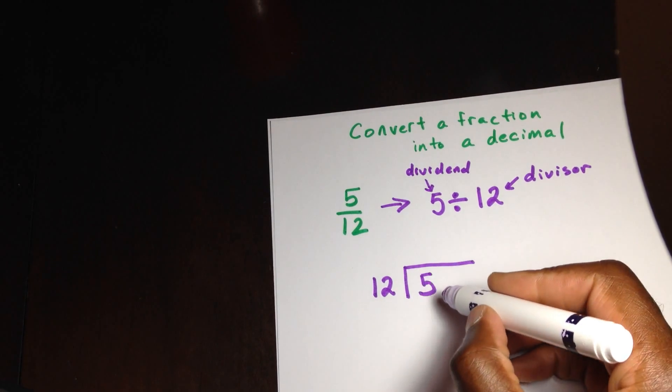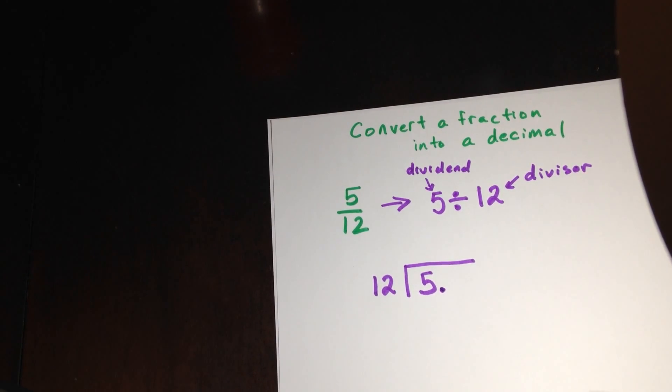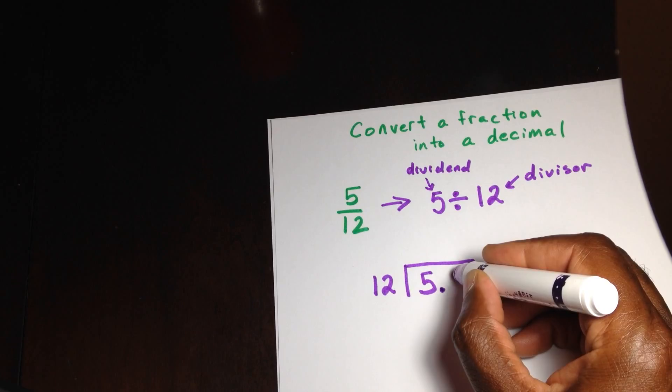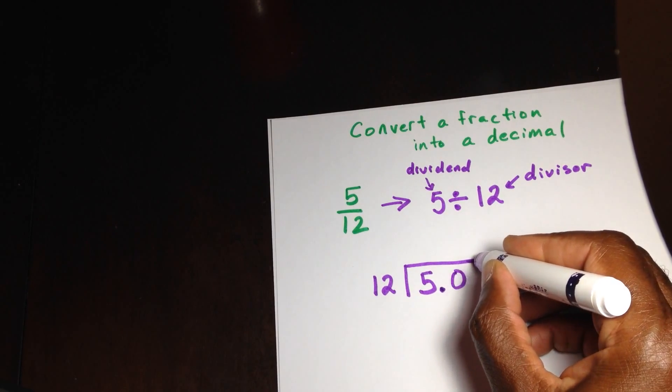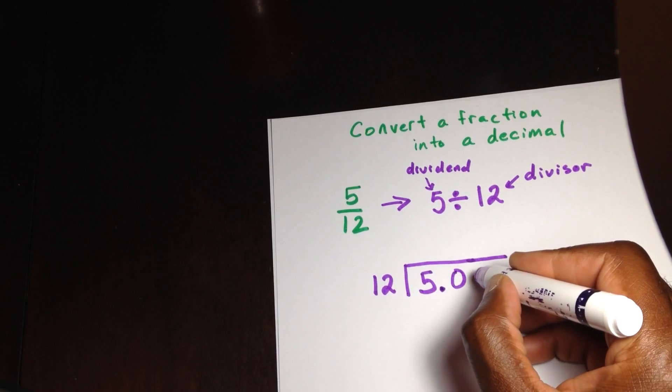What happens is we're now going to take this 5. We're going to put a decimal over here. And we're going to put now zeros. Now, we can put as many zeros as we want, but I'm going to put three zeros.